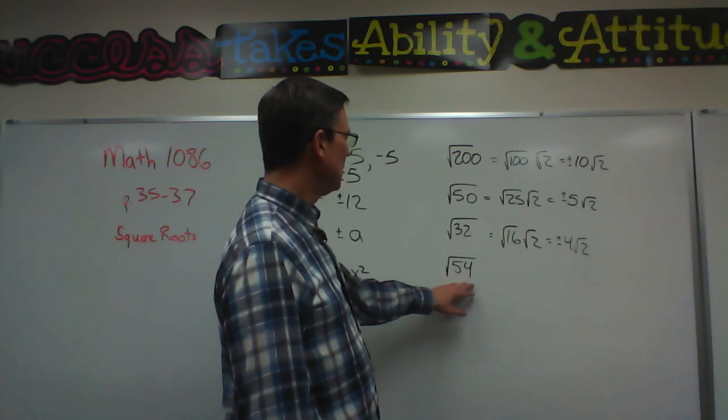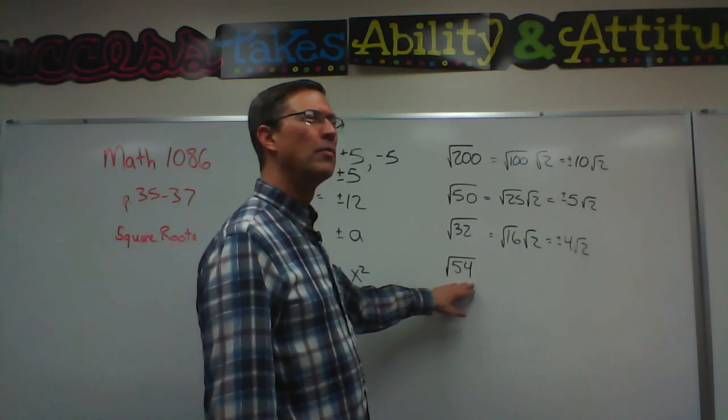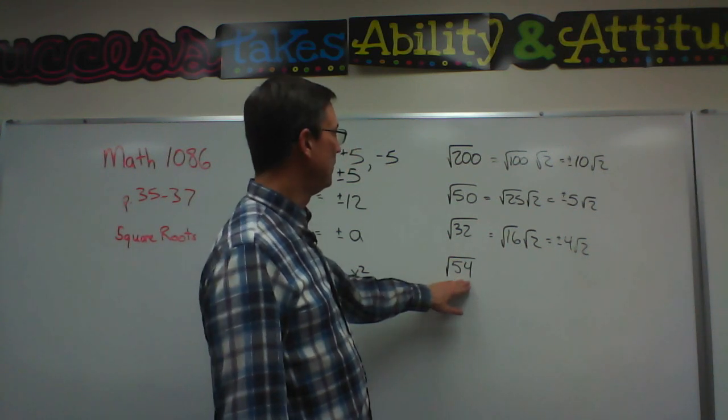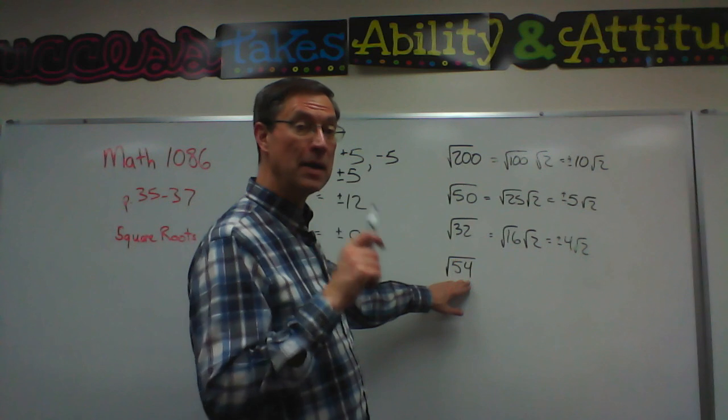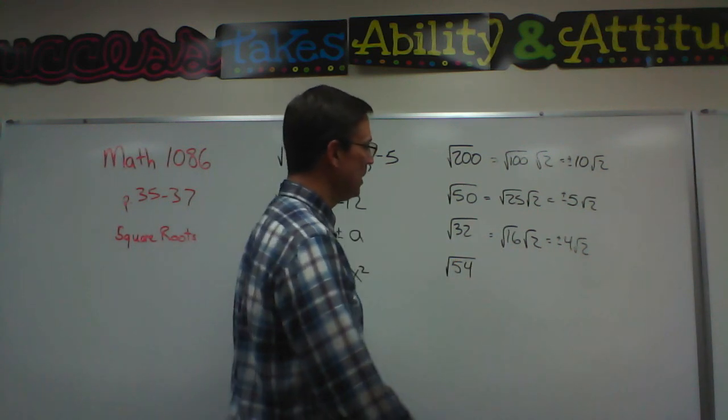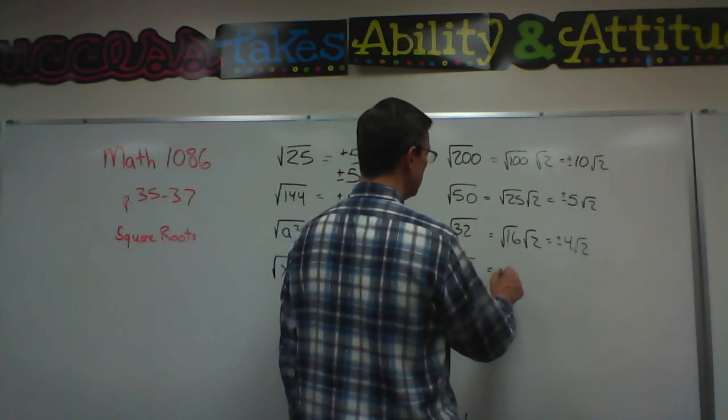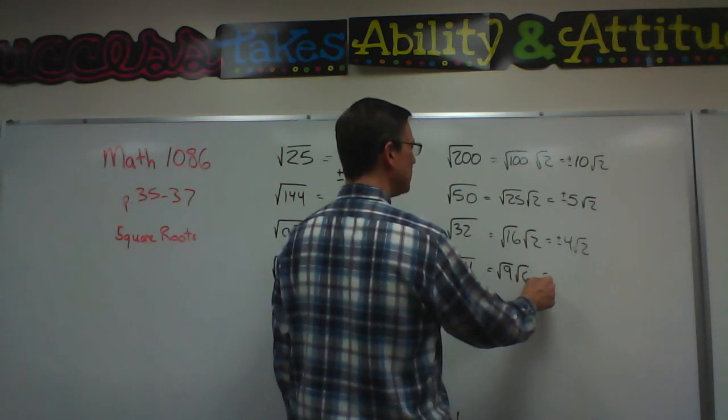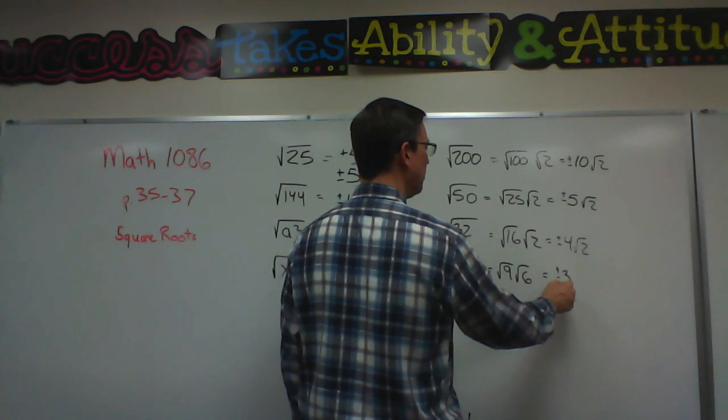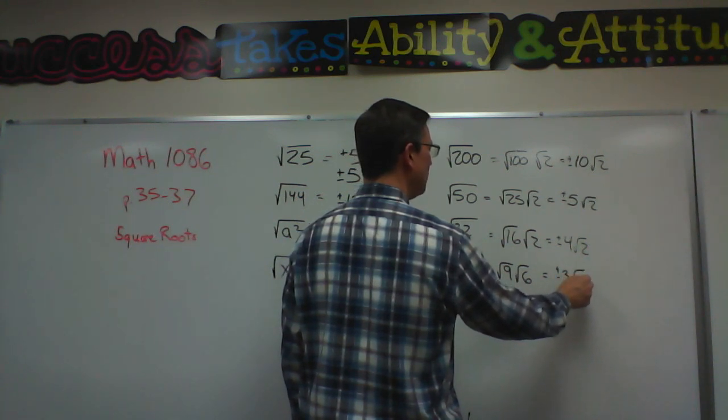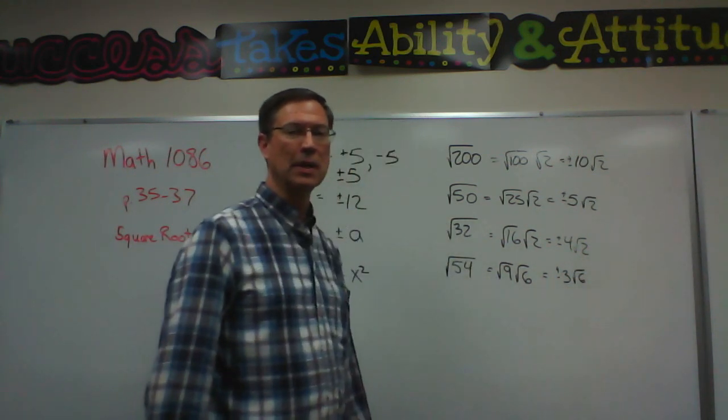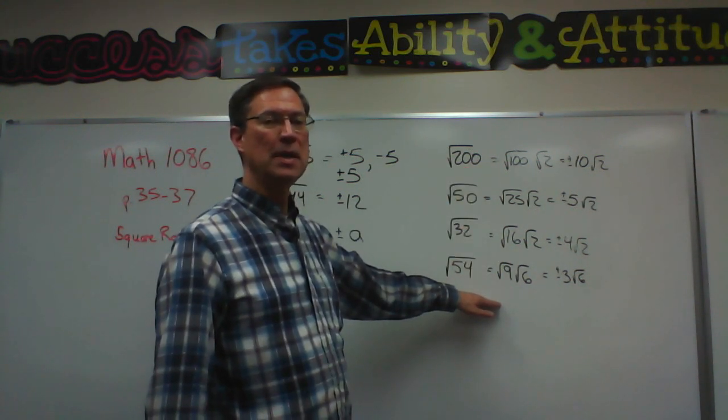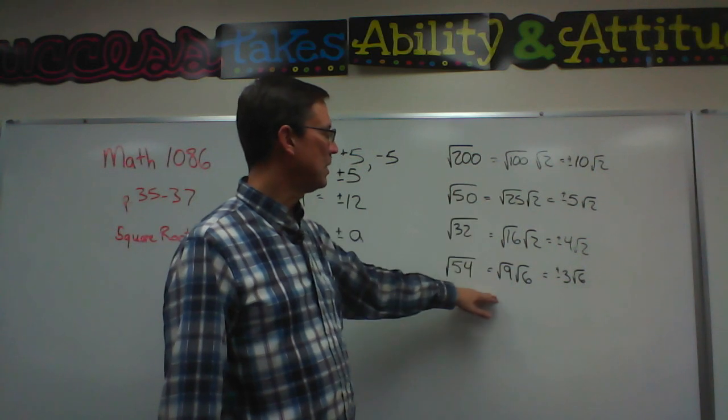Let's take the square root of 54. Remember, because you can add 5 plus 4 and get 9, then this number is divisible by 9. And 9 is a perfect square. So let's do square root of 9 and square root of 6. Now we've got a different one. The square root of 9 is plus or minus 3, and then we tack on the square root of 6. So this is the method that the PACE presents in how to do this type of concept.